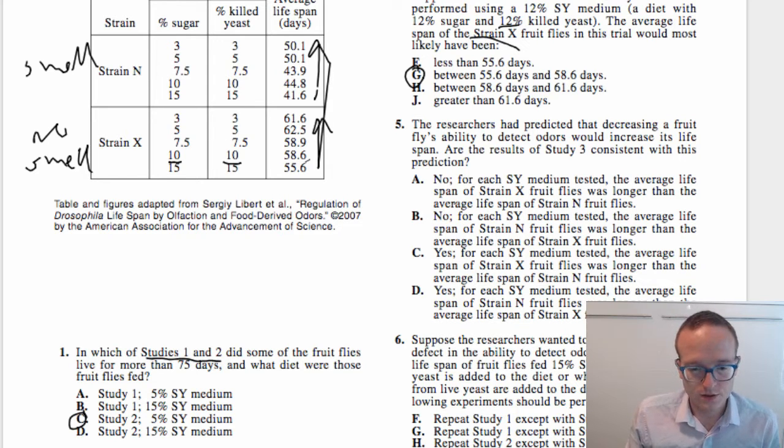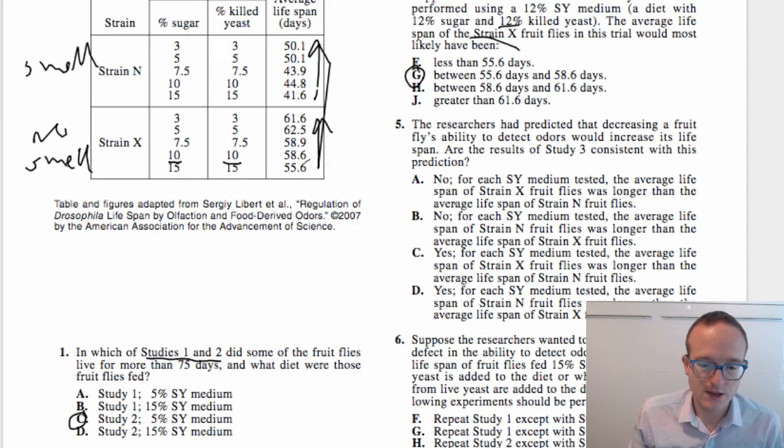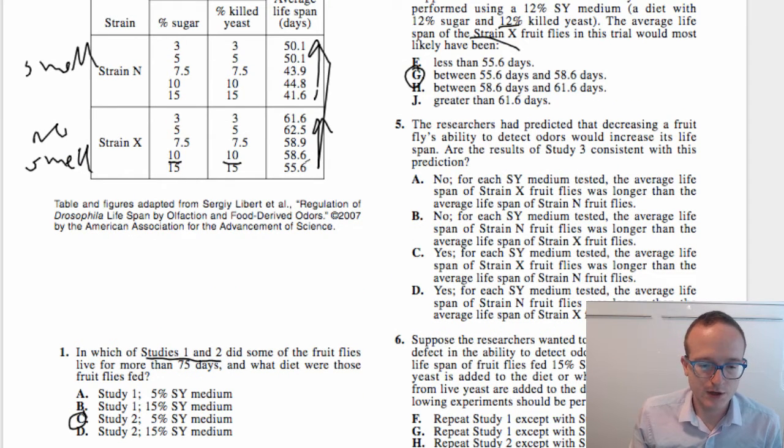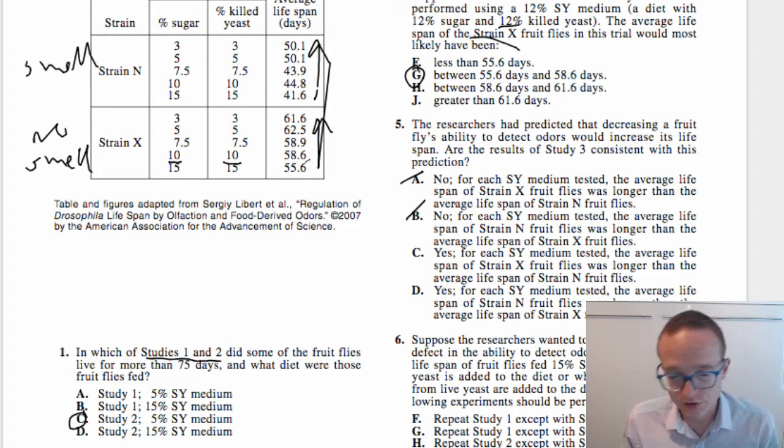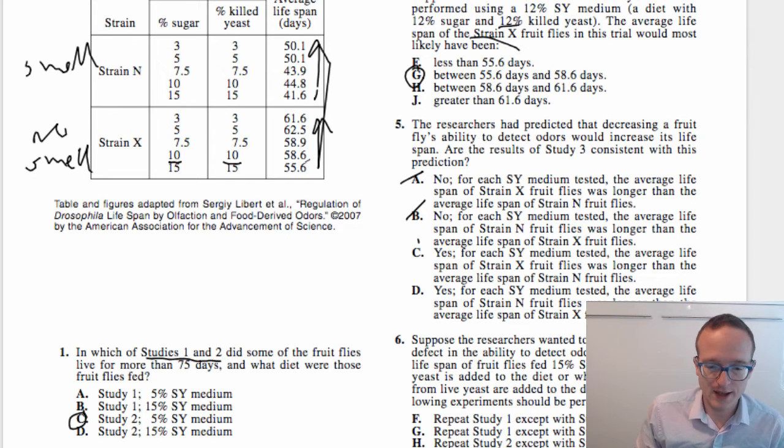Researchers had predicted that decreasing a fruit fly's ability to detect odors would increase its lifespan. Are the results of study three consistent with this prediction? Okay, so decreasing its ability to detect odors, remember strain X is no smell. So strain X is the decreased ability to detect odors, would increase its lifespan. So if we compare strain X to strain N, strain X does have an increased lifespan here, right? They're living between 55 and 61, these are 41 to 50. So yes, it is consistent. And so this A-B 1-2 sort of pattern, right? So yes, it is consistent. But is it because the average lifespan of strain X fruit flies was longer than N, or that N is longer than X? It's clear that X is longer than N.